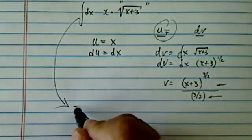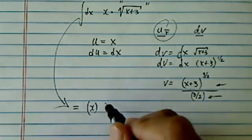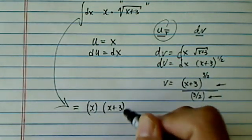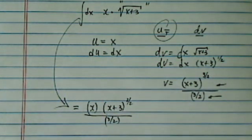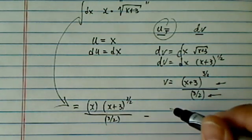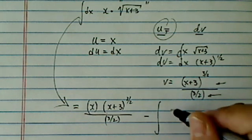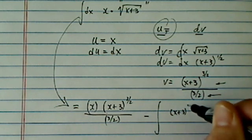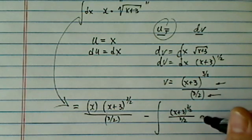Alright, integration by parts says, once you get that, we're going to have uv, which is x times x plus 3 to the 3 over 2 power. Like I said, keep those luggages around. uv minus v du. So I'm going to have v and du. So x plus 3, 3 over 2, 3 over 2, du is dx.